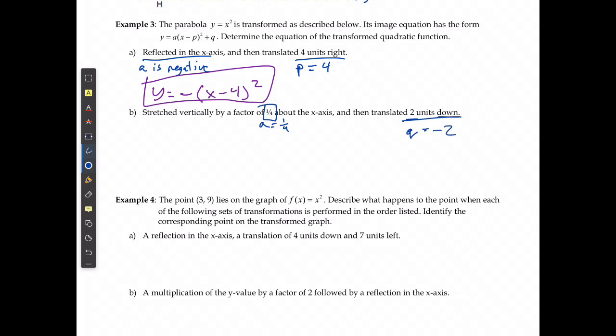In this case, we don't hear anything about a reflection, so a isn't going to become negative. And we don't hear anything about a horizontal translation, so p is just going to be 0.